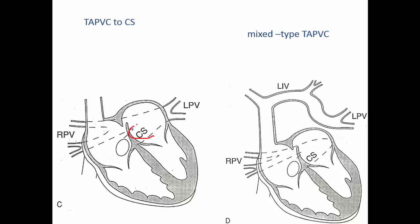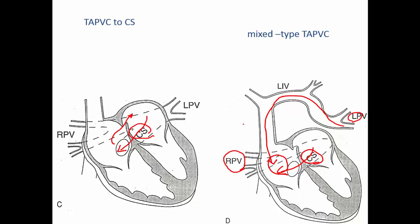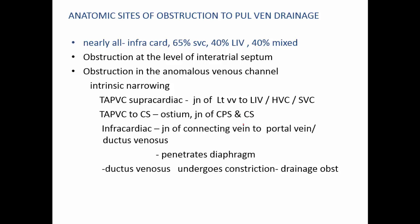In the cardiac type, the common chamber opens directly into the right atria through the coronary sinus — quite a short circuit — and life is sustained through the patent foramen ovale. In the mixed type — Darling's type four — the anomalous pulmonary veins drain partly into the coronary sinus and partly elsewhere. For example, the right pulmonary veins drain into the coronary sinus into the right atria, and the left pulmonary veins drain anomalously through the innominate into the superior vena cava and into the right atria.